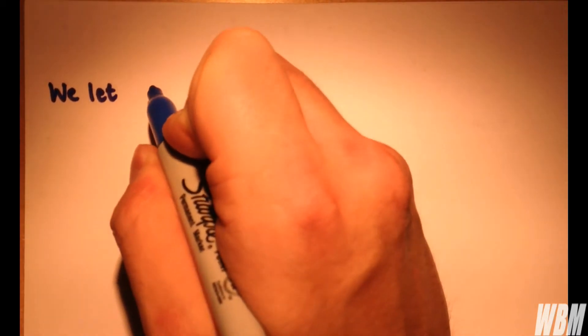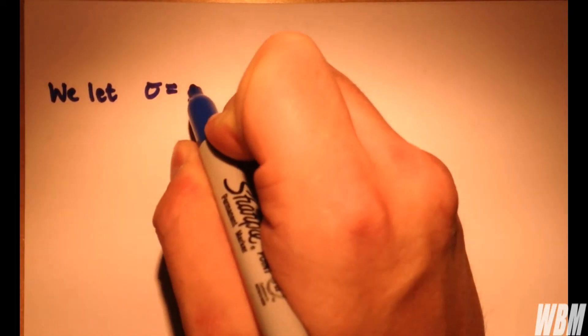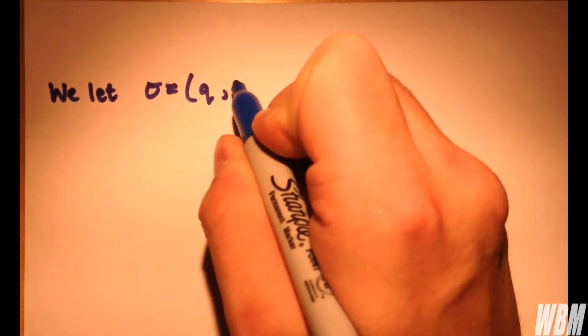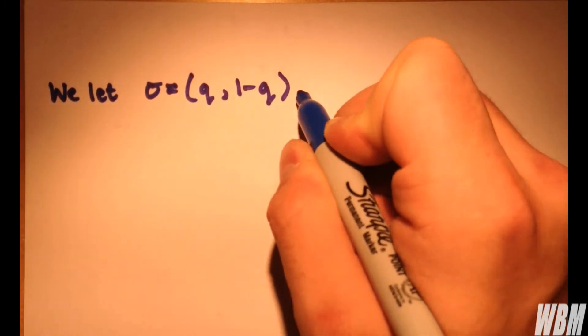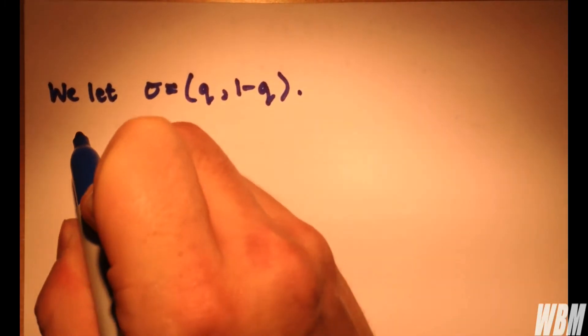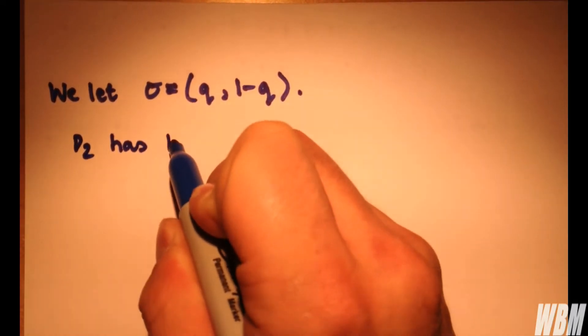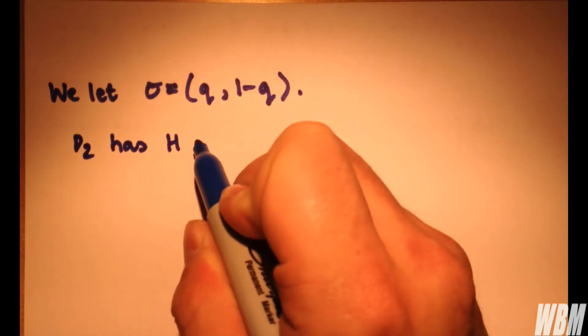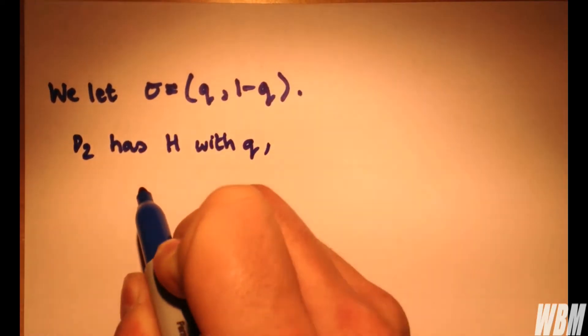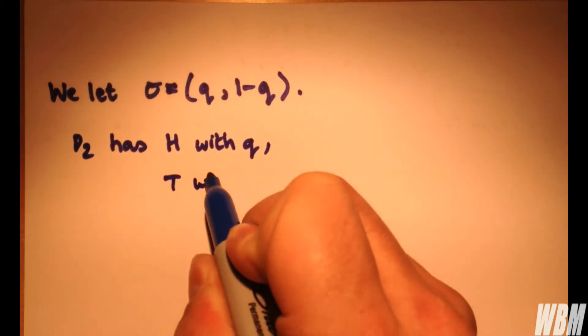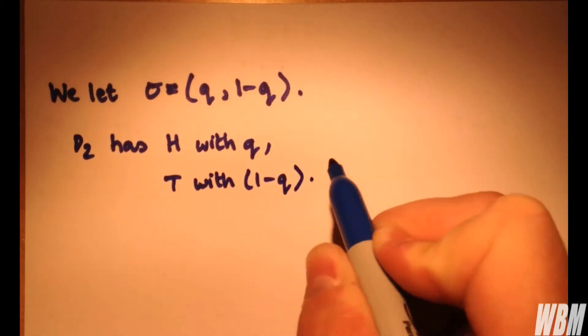How about player two? For player two, we'll let σ equal (q, 1-q) for his mixed strategy. And of course we have player two plays heads with probability q and tails with probability one minus q.